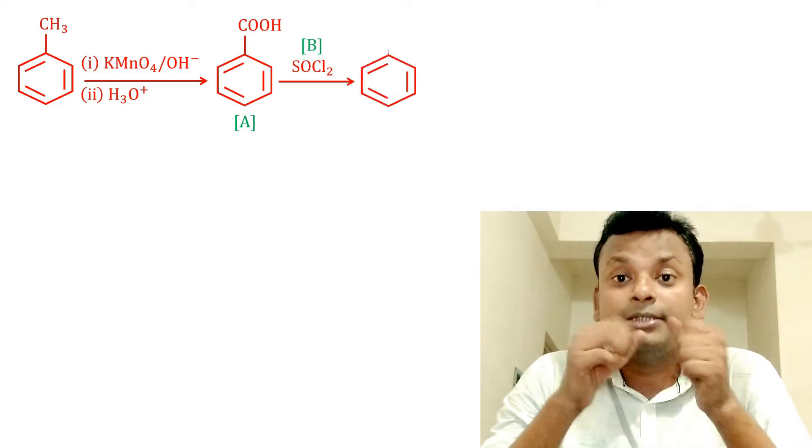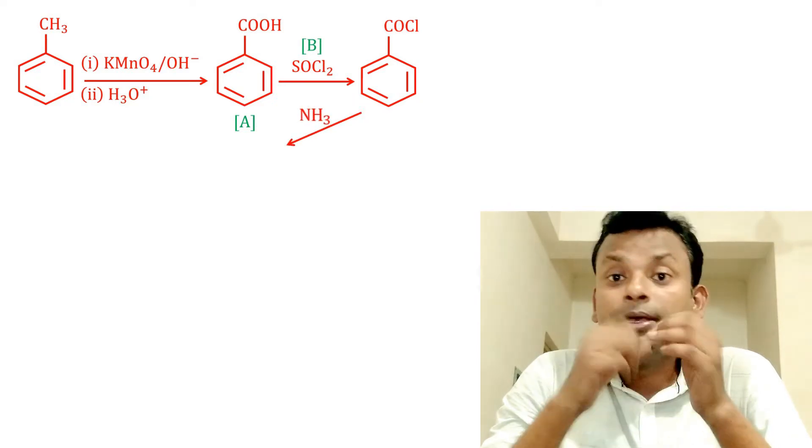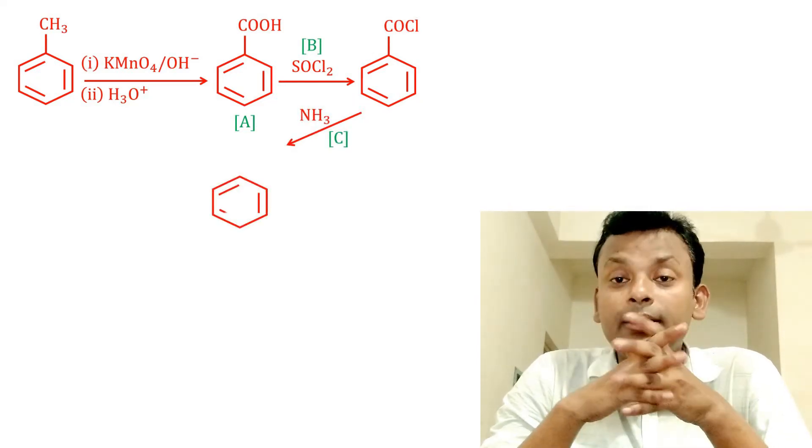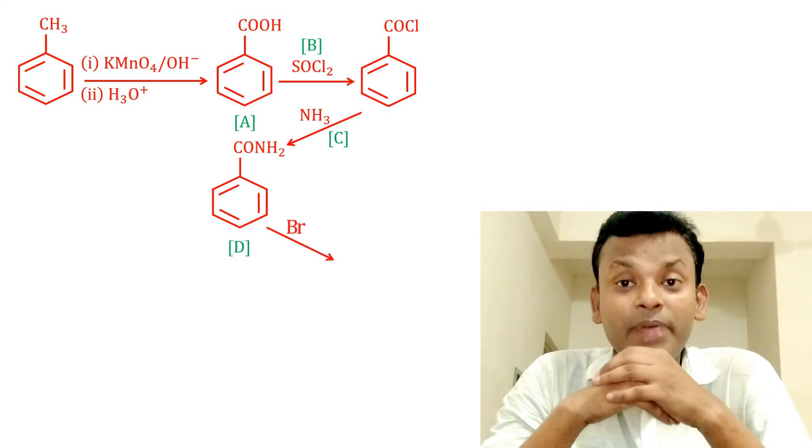And C, that is NH3 ammonia, gives benzamide, that is D. And Br2/KOH, that is E, that is Hofmann degradation reaction, gives aniline.